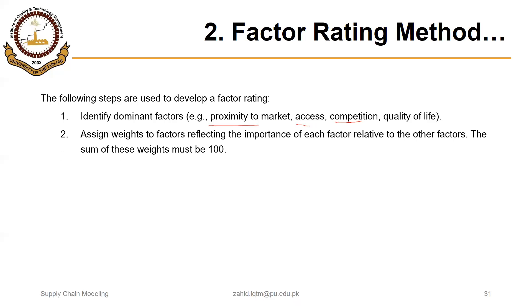An important point is that the sum of these weights must be 100. For example, if we have three factors F1, F2, and F3, you assign weights such that they sum to 100%. Suppose factor one is assigned a weight of 20, factor two a weight of 30, and factor three a weight of 50 — their sum is 100.